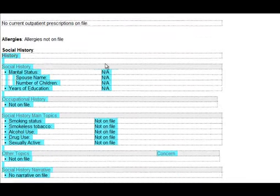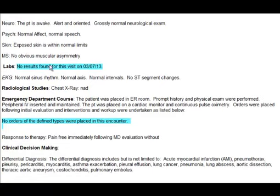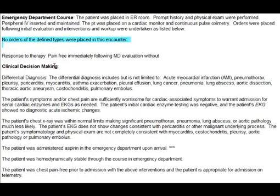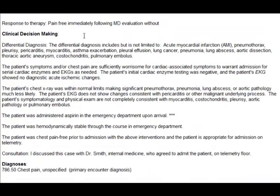This is just an example note on a playground, so there are no definite lab results or orders filled in. As we scroll down to the medical decision-making, you can see the MDM-generated material. This is part of the MedMacros-generated materials, including the differential diagnosis and the general admit note for a chest pain rule-out. All materials are specified to your group depending on your practice — if you have a chest pain observation unit, these notes are adapted to that.